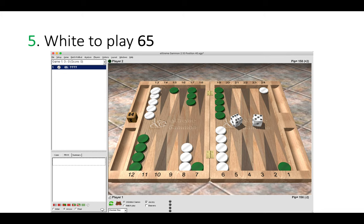Finally, let's look at this one. White's to play a six-five, so white started with a six-five and green rolled a six-three. And now we have another six-five to play as white.